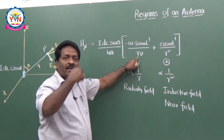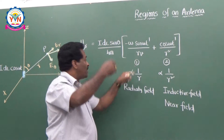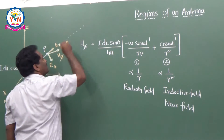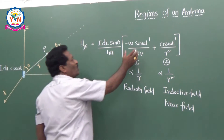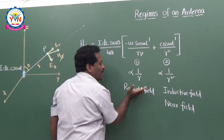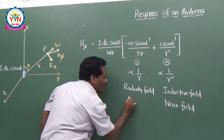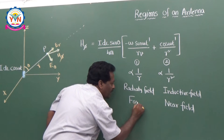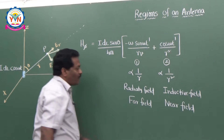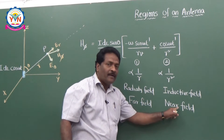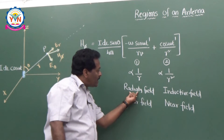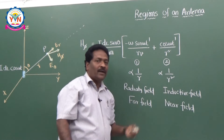If R is more, that means at far distances away from this antenna, then the first term — inversely proportional to R — is going to dominate. This term is called the radiating field, which is also called the far field of an antenna. So there are two fields: one is the far field and the other is the near field.